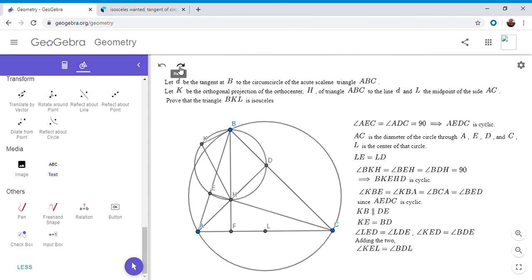And so therefore, those two triangles have to be congruent by side angle side, because KE is equal to BD, LE equals LD, and angle KEL is equal to angle BDL. So they're congruent by side angle side. And so therefore, KL equals BL, which is what we wanted to show.